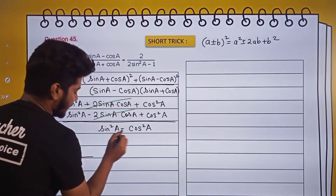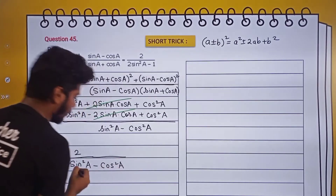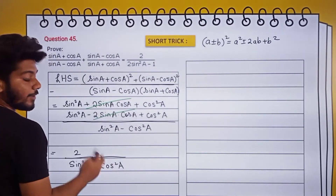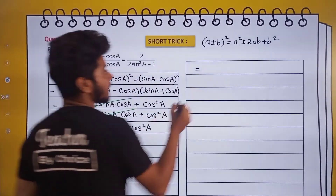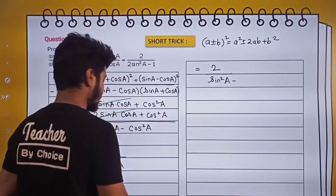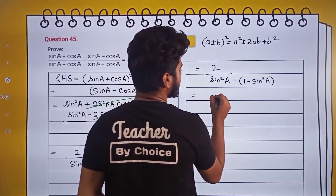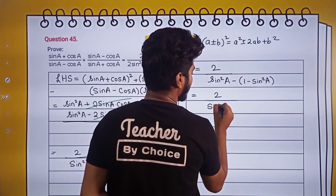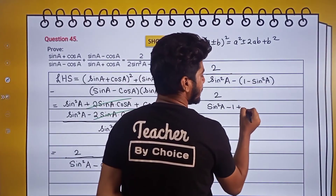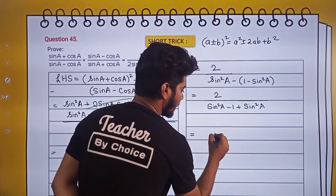In the denominator we have sin²A - cos²A. We don't want cosine, so we replace cos²A with (1 - sin²A). This gives sin²A - (1 - sin²A), which expands to sin²A - 1 + sin²A. So sin²A + sin²A becomes 2sin²A, giving us 2/(2sin²A - 1).